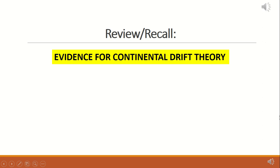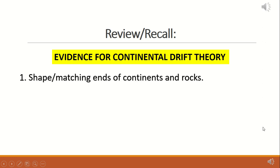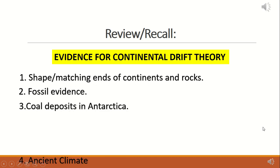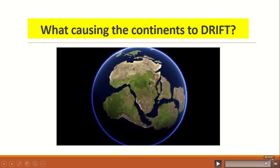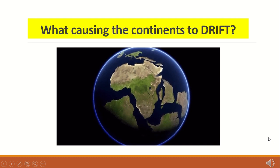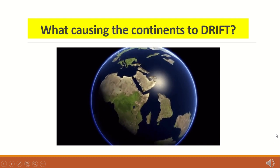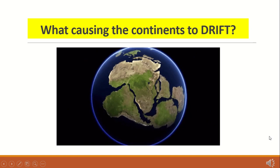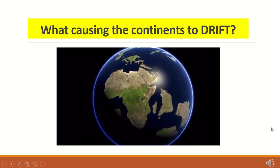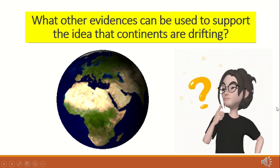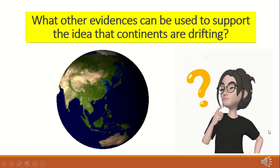Here are the evidences that support the continental drift theory proposed by Alfred Wegener: the shape or matching ends of continents and rocks, fossil evidences, coal deposits in Antarctica, ancient climate, and glacier carvings. Despite these evidences, the continental drift theory was still rejected at that time because he could not explain what was causing the continents to drift.